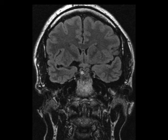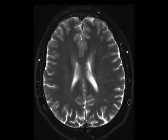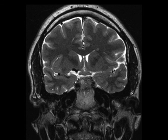Gray matter heterotopias can be subdivided into nodular heterotopias and diffuse heterotopias. The nodular heterotopias consist of subependymal heterotopia, which is demonstrated in this case and is the most common subtype. Other forms include subcortical heterotopias. Diffuse heterotopias consist of band heterotopia, lissencephaly, and laminar heterotopia.